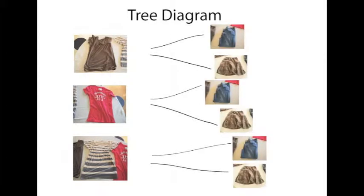For each top, there are two choices of bottom outfits. Using the fundamental counting principle, we would multiply three by two, which makes six.